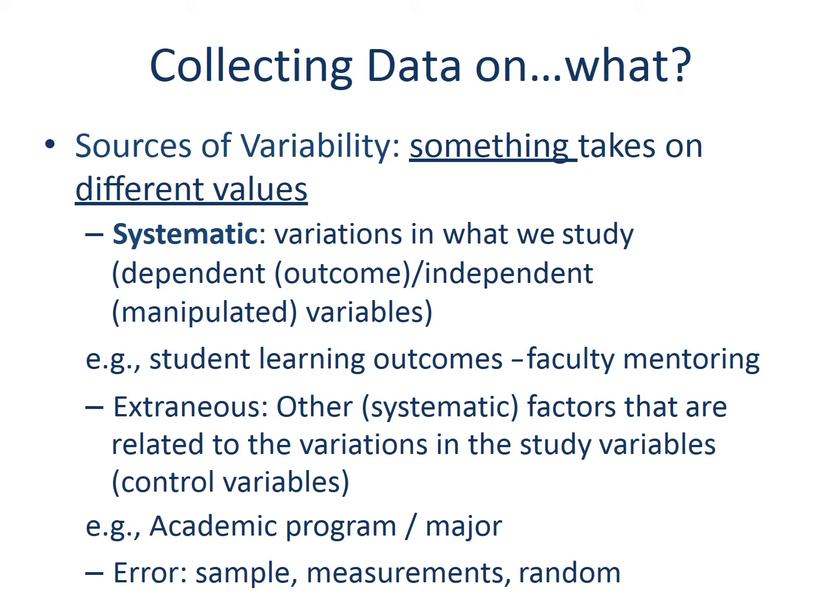Variability comes from three sources, and what we want to capture as the focus of the study is the systematic variance. For example, if we want to explain the relationship between student learning outcomes and faculty mentoring, we want to see if student learning outcomes have variations according to the variations in faculty mentoring. The actual changes in these two variables — our dependent or outcome and independent or manipulated variables — are the systematic variations we are interested in and should be the main factors we collect data on.